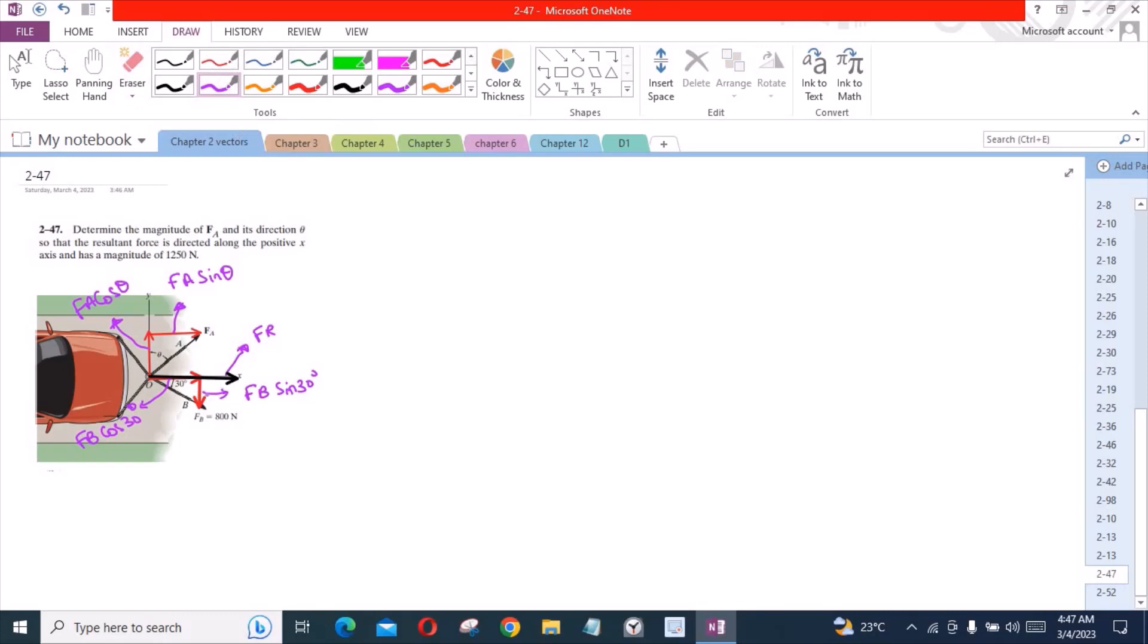Now we can apply the equations of equilibrium. So we have first equation which is sum of forces in y-axis equals 0. I am considering up direction as positive. So we have Fa cos theta minus Fb sin 30 degrees equals 0.